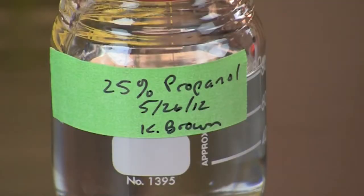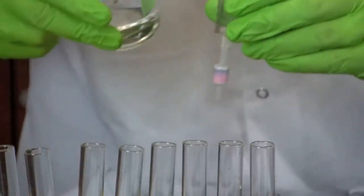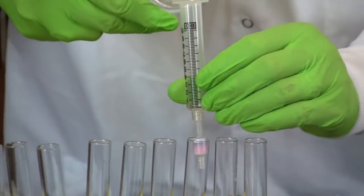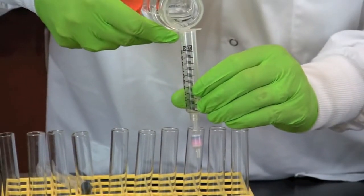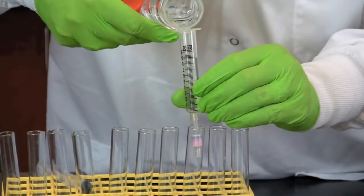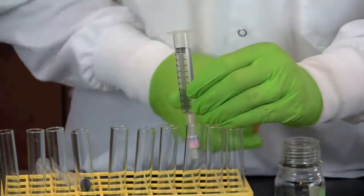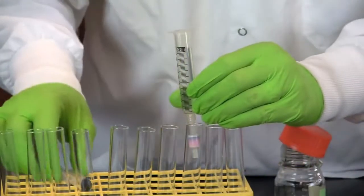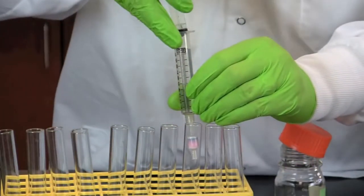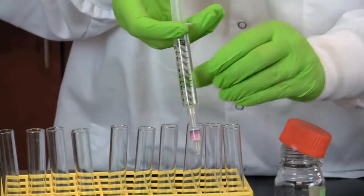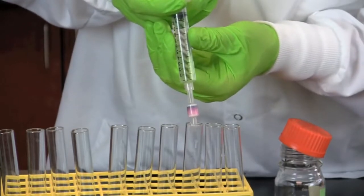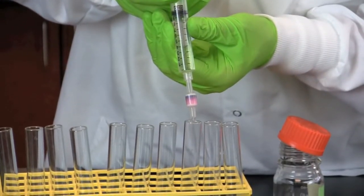You will now add 10 ml of 25% 2-propanol. Replace the plunger and push the alcohol through the column. Collect the flow through in the next empty test tube.